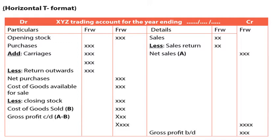We start with the opening stock — put the amount in the second column. Then add purchases in the first column, then add carriage inwards. That gives us purchases plus carriage inwards. Then we subtract less returns outwards, and we arrive at our net purchases.